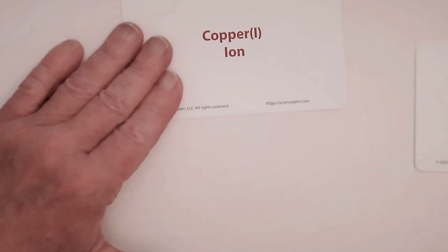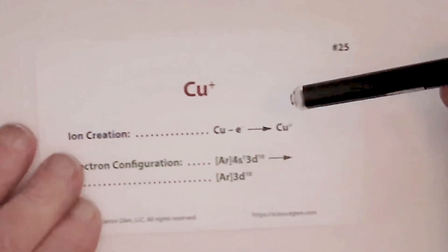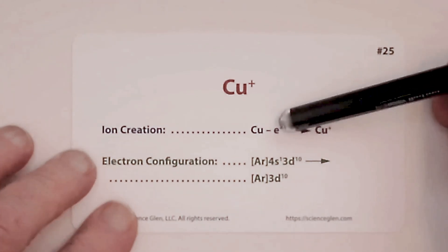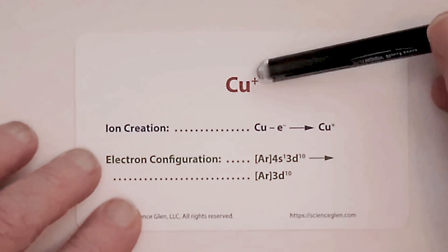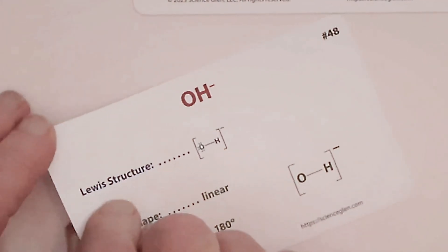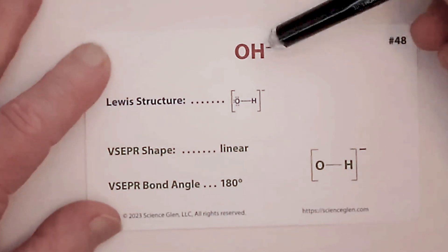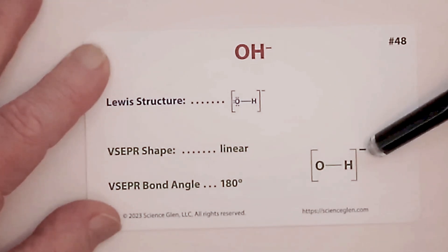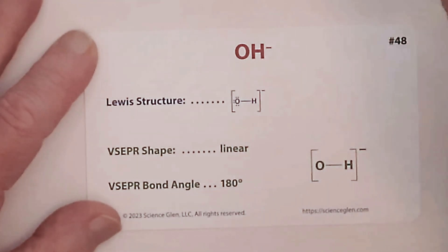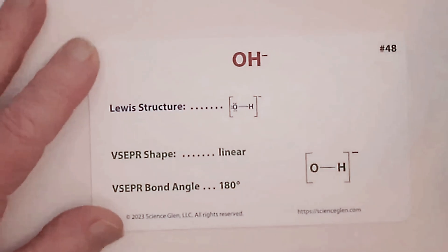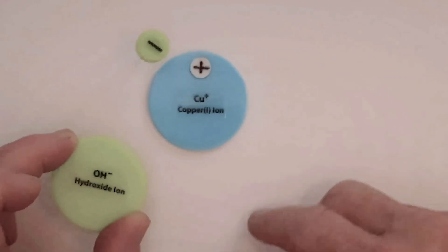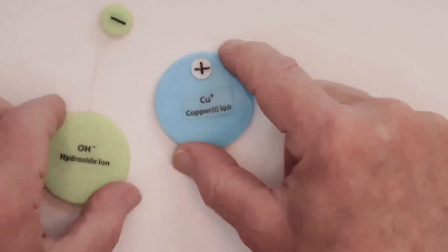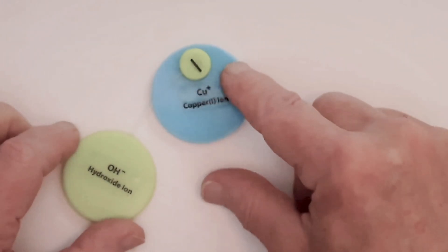So now let's start with copper 1. Copper 1 loses one electron — it loses a 4s1 electron and becomes plus 1. Now if we put that together with hydroxide, hydroxide has got an oxygen and a hydrogen grouped together with an overall charge of minus 1. So now if we put these together, plus 1 and minus 1, let's look at the ionic bond disk model to make it easy. We have a copper and a hydroxide, and these just go together like that. So you get CuOH.